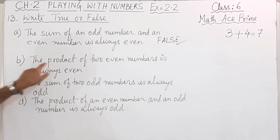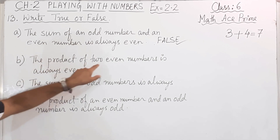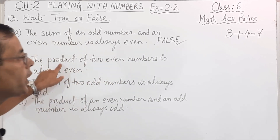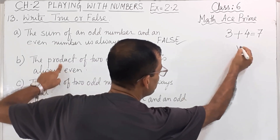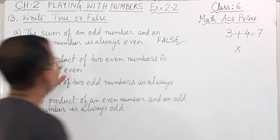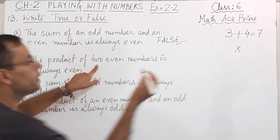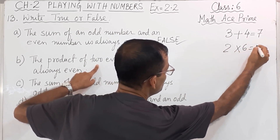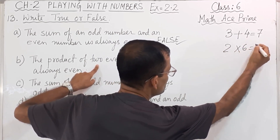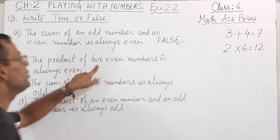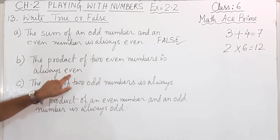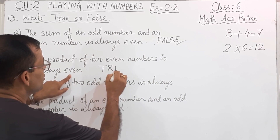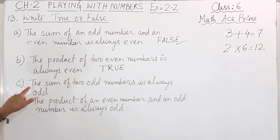Next statement: the product of 2 even numbers is always even. Product means multiply. Take 2 even numbers — say 2 and 6. So 2 times 6 equals 12, and 12 is also an even number. So it is always even. This statement is true.